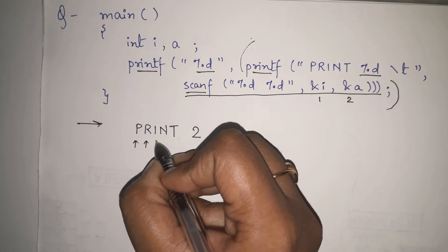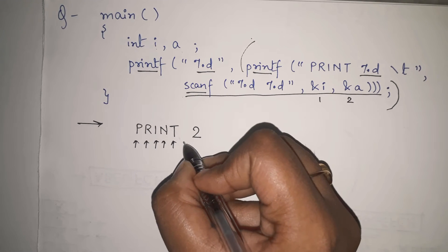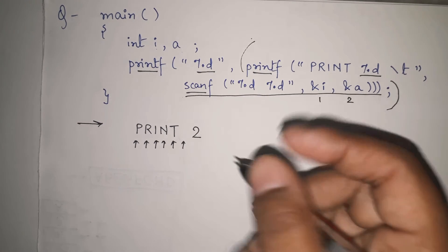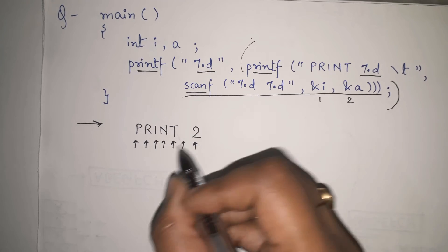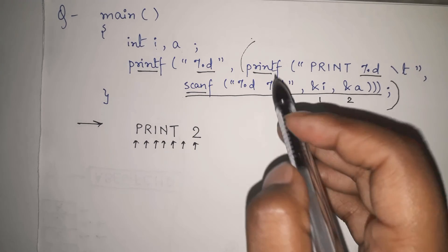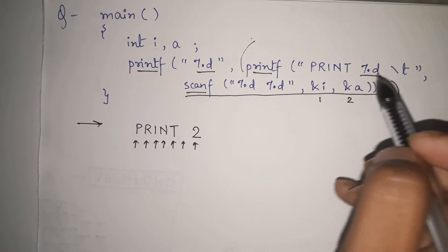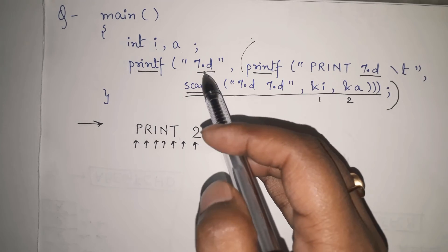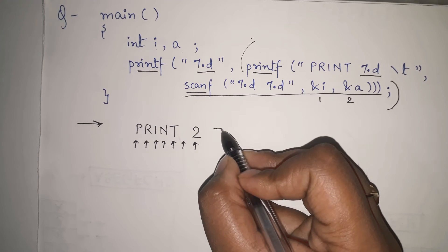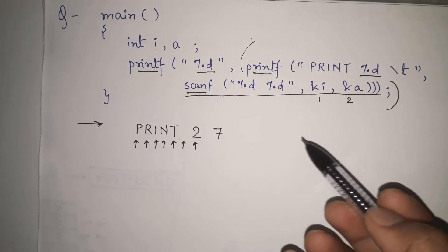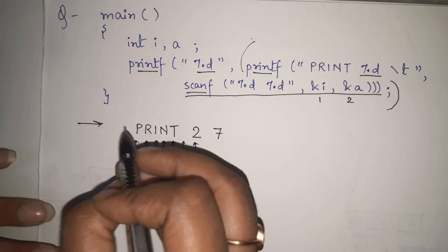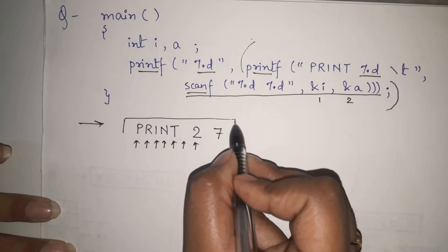The outer printf counts the total number of characters printed inside it. Counting: p-r-i-n-t = 5, then a space = 6, then '2' = 7. So total 7 characters are printed inside, and the outer %d will print 7. Therefore the final output of this code is: printf 2 7.